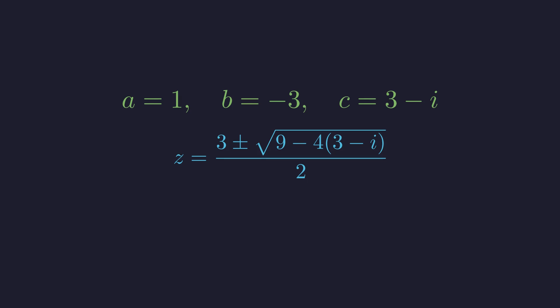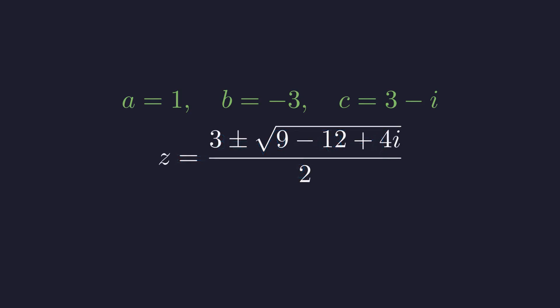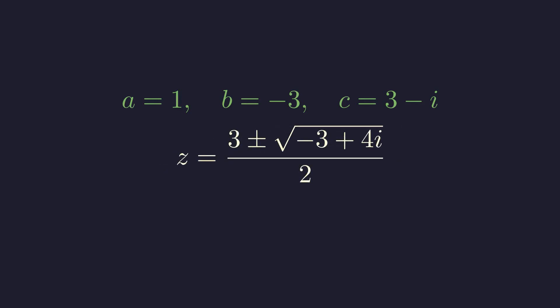Let's simplify the discriminant: 9 minus 4 times 3 plus 4i. This gives 9 minus 12 plus 4i. Since 9 minus 12 equals negative 3, we need the square root of negative 3 plus 4i.